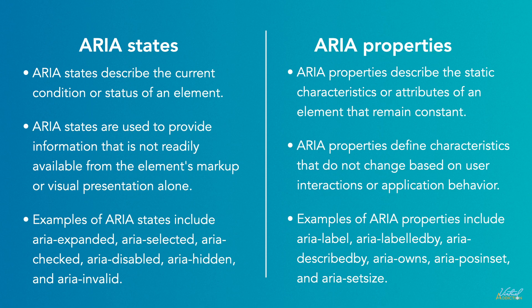In summary, ARIA states represent the dynamic and changing aspects of an element, indicating its current state or condition and reflecting user interactions or application behavior. ARIA properties, on the other hand, describe static characteristics or attributes that remain constant and provide additional information beyond the element's natural semantics. Both ARIA states and properties are crucial for enhancing accessibility by conveying important information to assistive technologies, allowing users with disabilities to perceive and interact with web content more effectively.